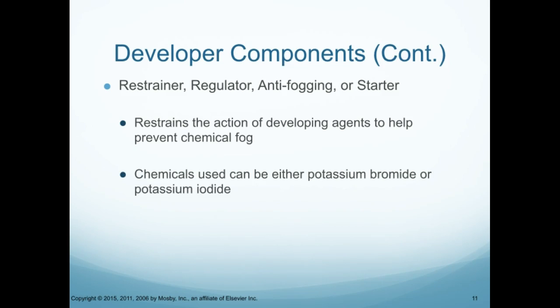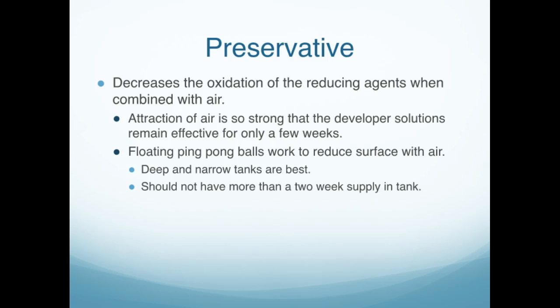Inside the developer we also have the restrainer, regulator, anti-fogging agent, and starter. This restrains the action of developing agents to help prevent chemical fog. The chemicals used can be either potassium bromide or potassium iodide. Remember, you need to know what those functions are.